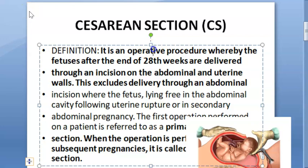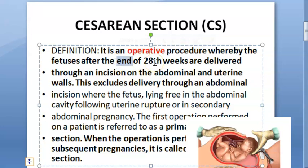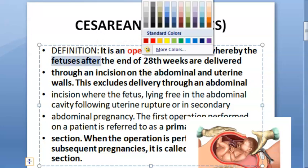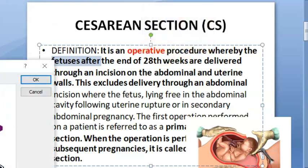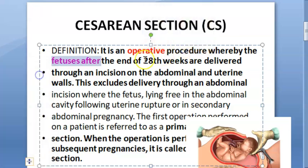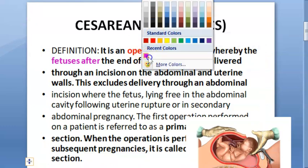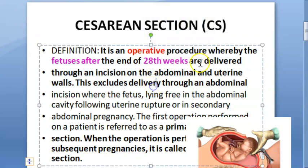So it is an operative procedure. Basically, the definition of caesarean section is that you are delivering the fetus after 28 weeks. So if you are delivering a fetus which is 27 weeks, then it is not called as caesarean section.